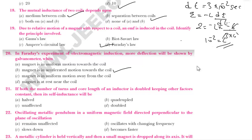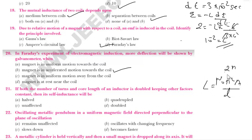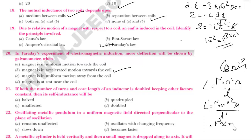If both the number of turns and core length of an inductor are doubled keeping other factors constant, what happens to the self-inductance? Using L = μ₀n²A/l: number of turns becomes 2n, so L' = μ₀(2n)²A / 2l = 4n²μ₀A / 2l = 2 times the initial value. Self-inductance is doubled.